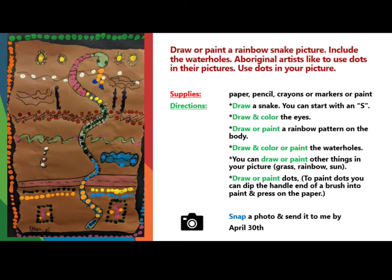For this project, you will draw or paint a Rainbow Snake picture. Include the waterholes. Aboriginal artists like to use dots in their pictures, so use dots in your picture as well.